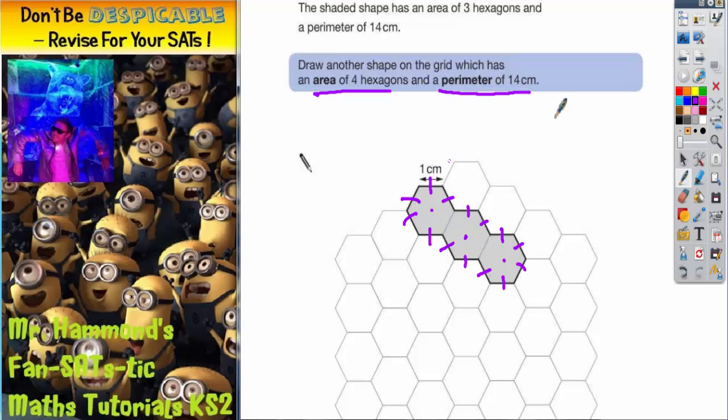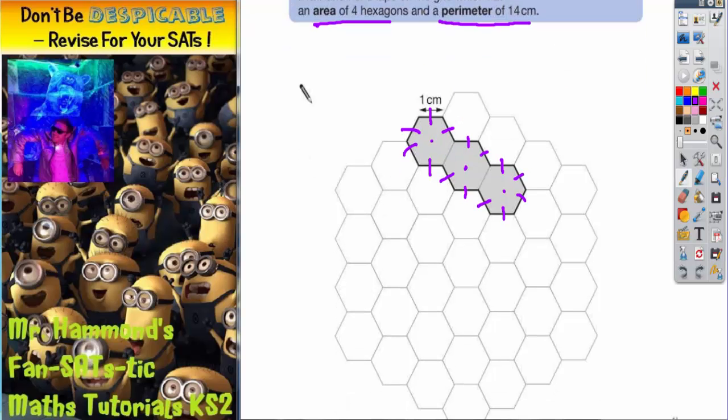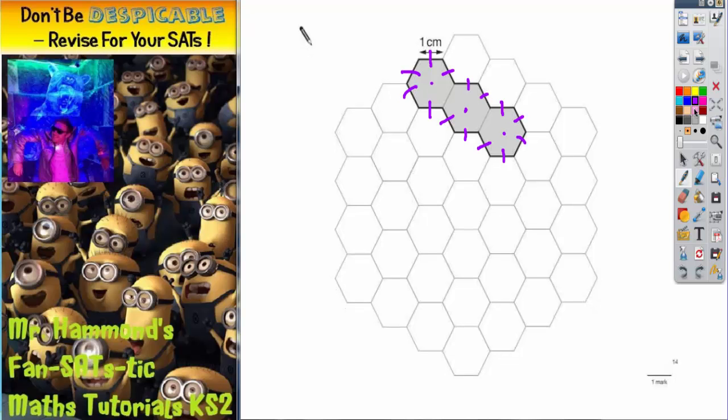So that's where that comes from. What we've got to do is we're looking for an area of 4 hexagons and a perimeter of 14.